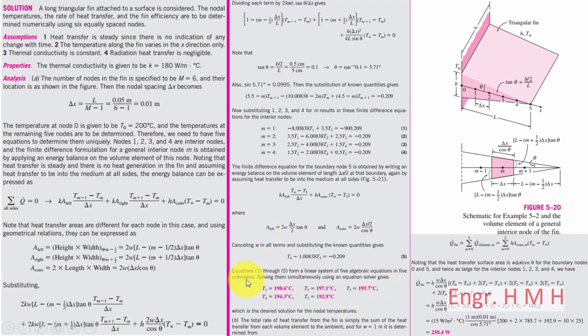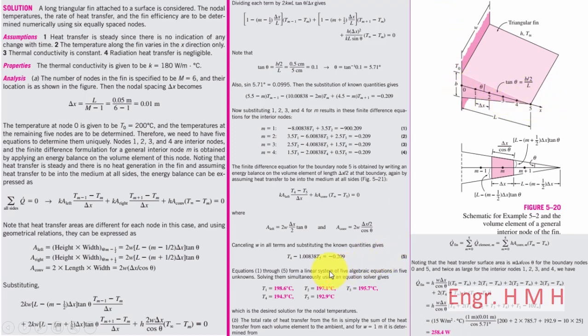Here you can see the answers of the temperatures using algebraic techniques. The heat loss from the fin is 258.4 watts. These temperatures are at the points 0, 1, 2, 3, 4, 5 centimeters — these are the points at which temperatures are found.